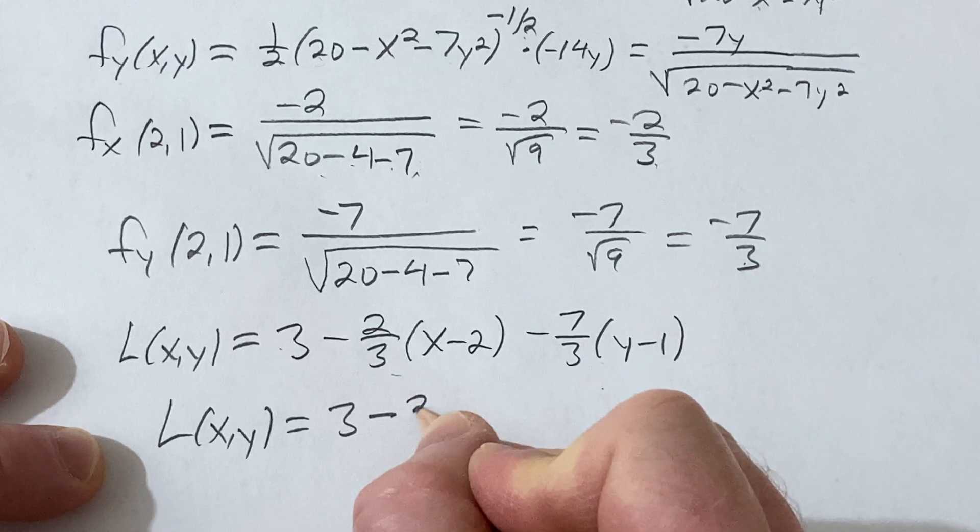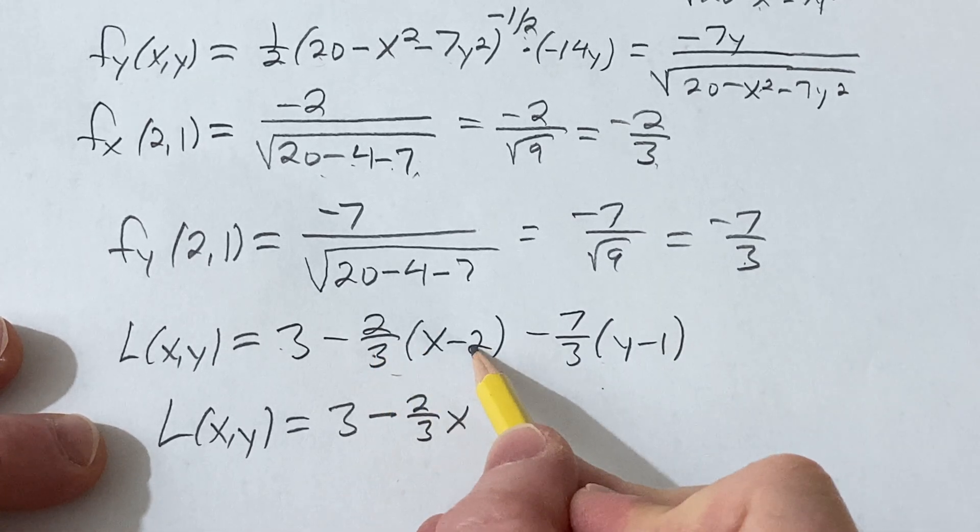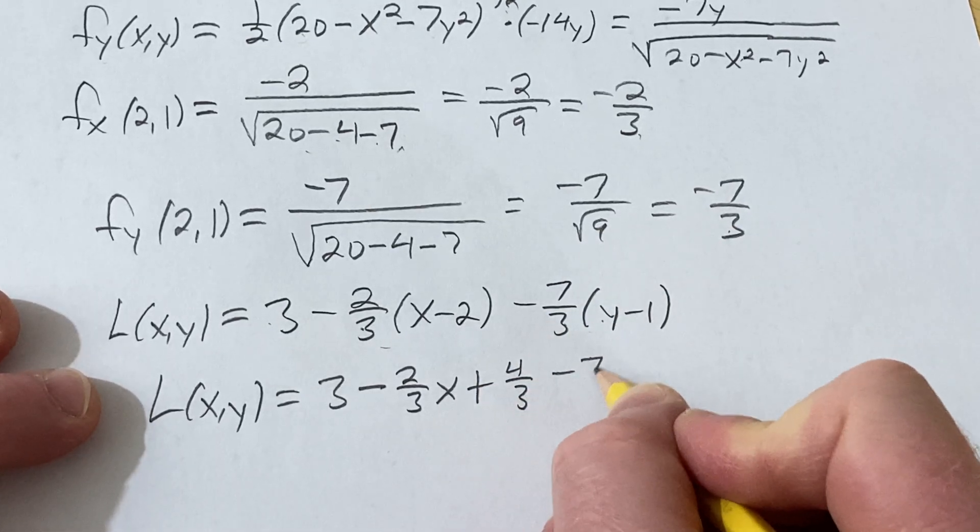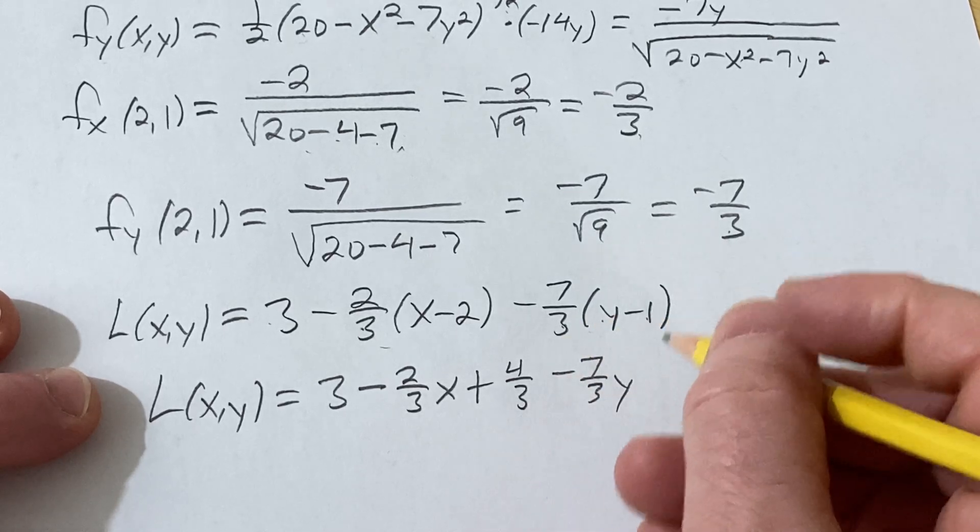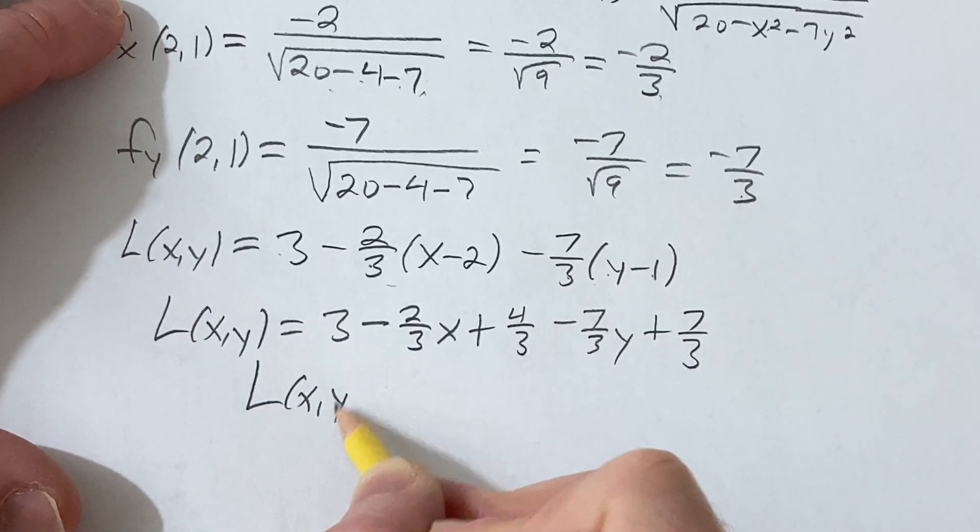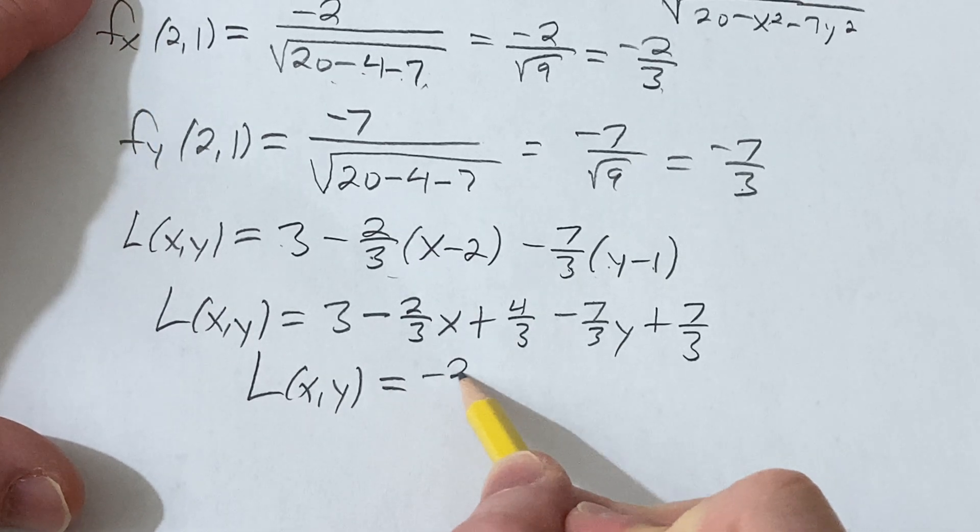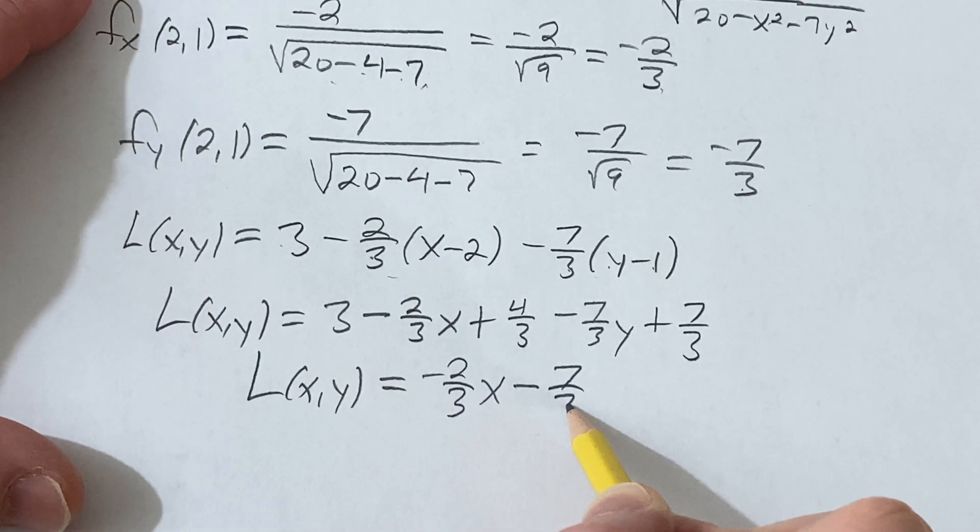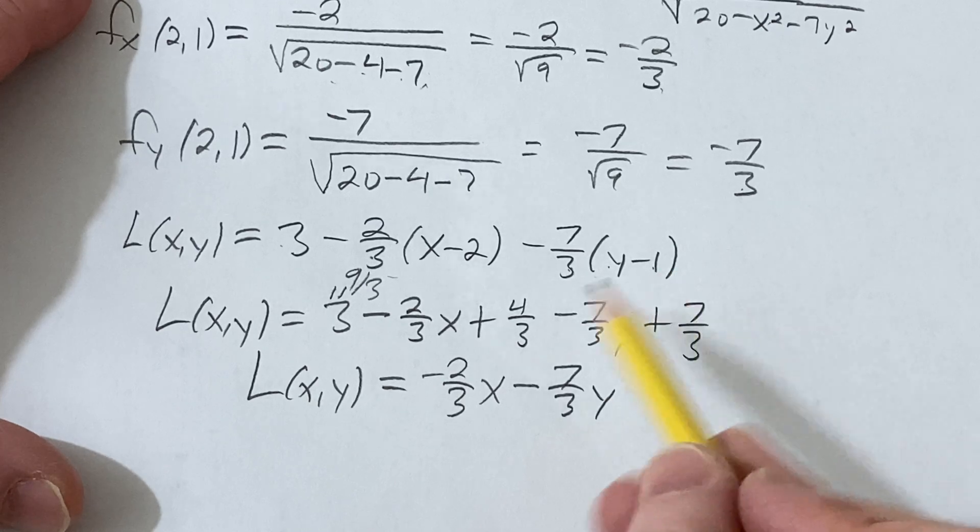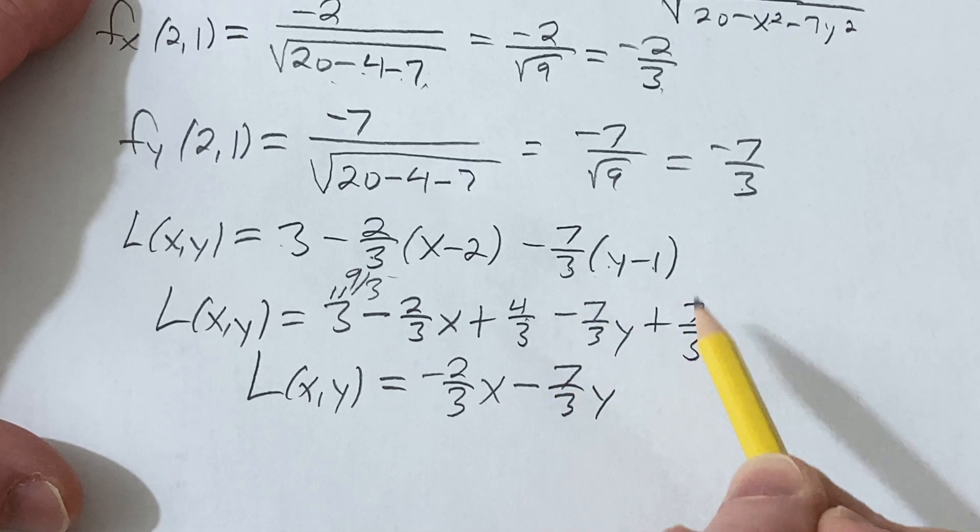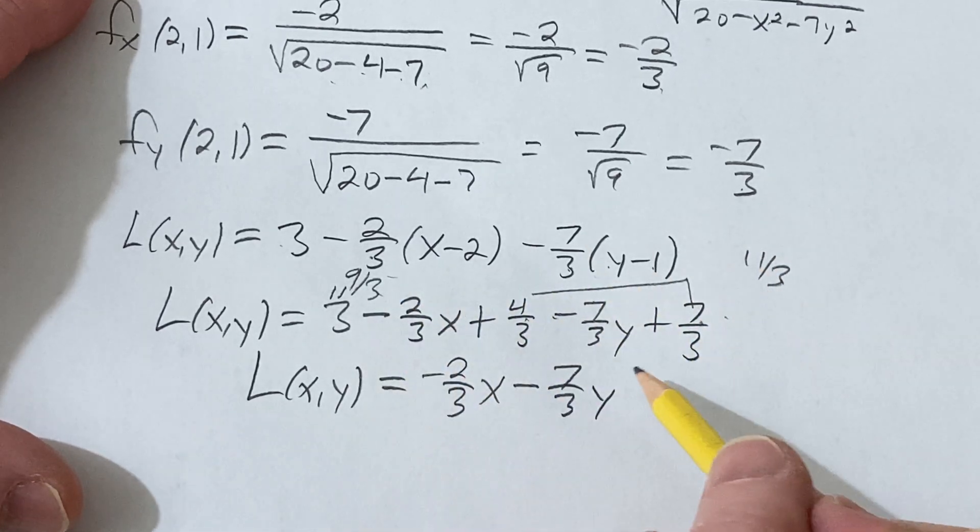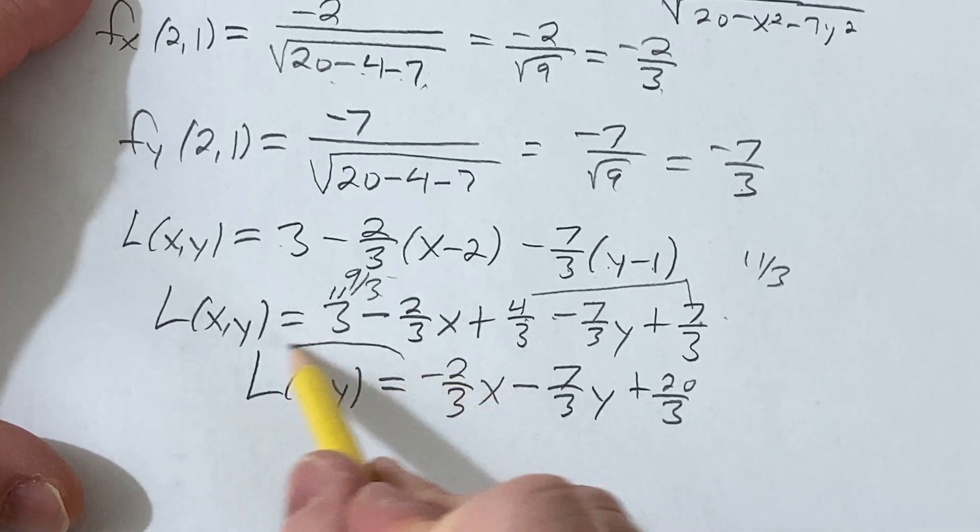3 - 2/3x, -2/3 times -2 is +4/3. And then this is -7/3y, -7/3 times -1 is +7/3. So let's think about what's happening here. This is L(x,y) = -2/3x - 7/3y. Think of 3 as a number over 3, so 9/3. So we've got 4/3 plus 7/3 is 11/3, and then plus 9/3 is 20/3. So that's the answer.